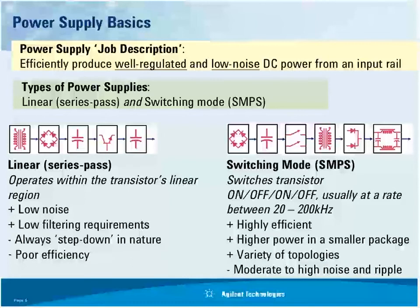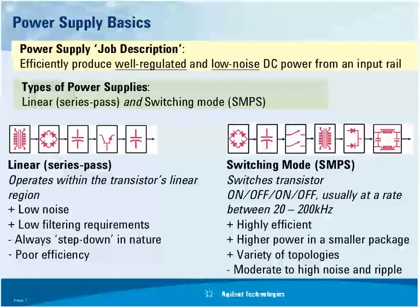What is the job of a power supply? It's to produce a well-regulated, low-noise DC output. There are basically two different types: the linear power supply and the switch mode power supply, typically called switching power supplies. There are advantages and disadvantages of each. Years ago there were only linear power supplies. Some advantages are they have low noise, they can be very well regulated, and they're relatively easy to filter.